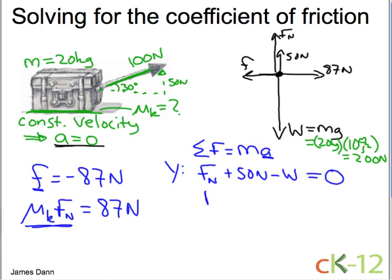So now I have the normal force, plus 50 newtons, minus 200 newtons, equals zero. You can do the algebra, or you can just see that the normal force must equal 150 newtons. That would be the solution to this equation.